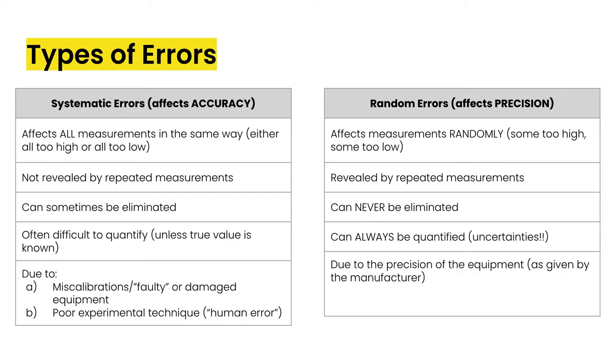They can never be eliminated. But they can always be quantified by recording the uncertainty of the piece of equipment. So random errors are really just due to the precision of the equipment. And this is typically given by the manufacturer.